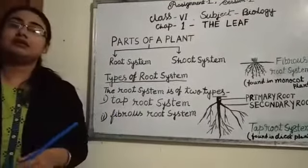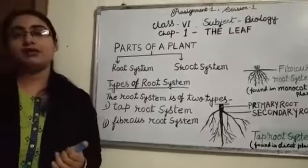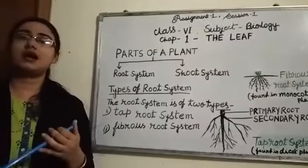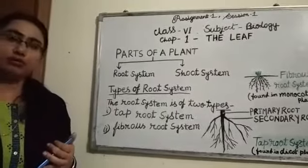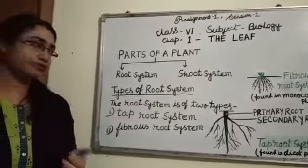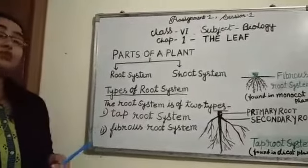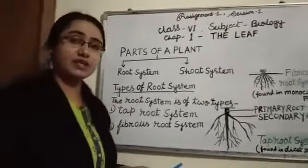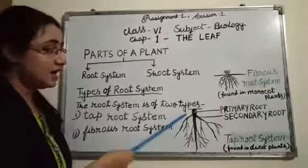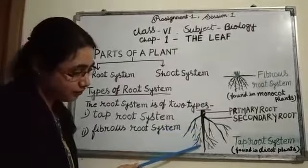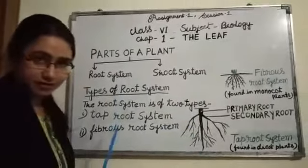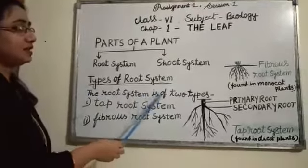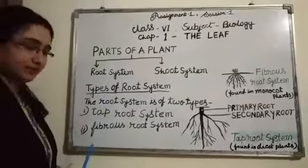The part of a plant which grows under the ground is called root. Root grows downwards, away from sunlight and towards the force of gravity. The root system is of two types.